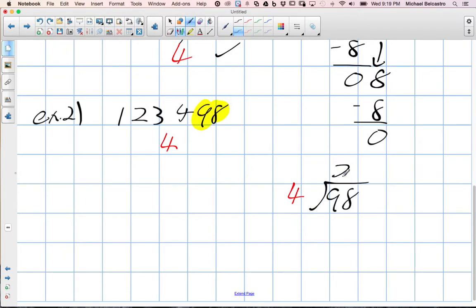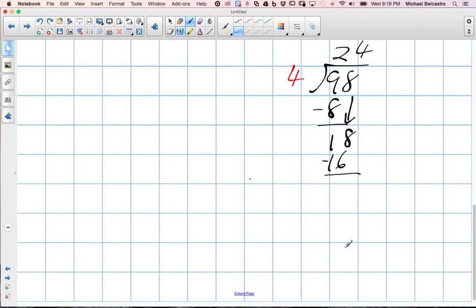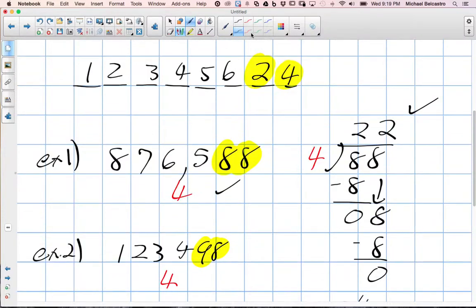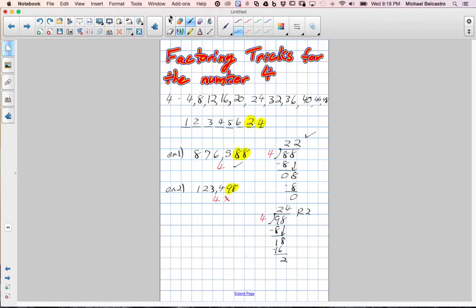4 goes into 9 two times. 2 times 4 is 8, so we subtract, bring down our 8. 4 goes into 18 four times. 4 times 4 is 16. When we subtract, we have 2, so we have remainder 2. Because there's a remainder, 4 does not go into 123,498. So that's our trick for dividing the number 4.